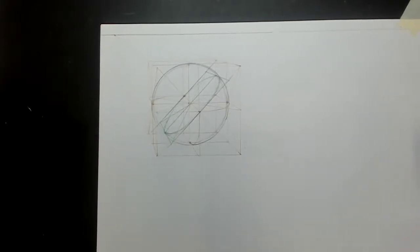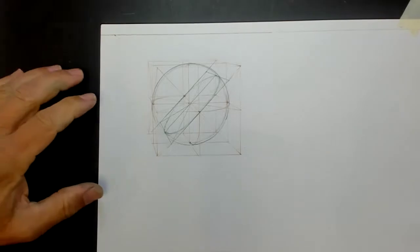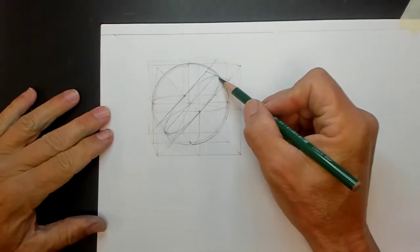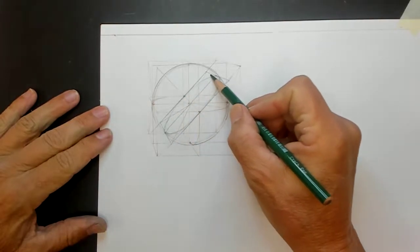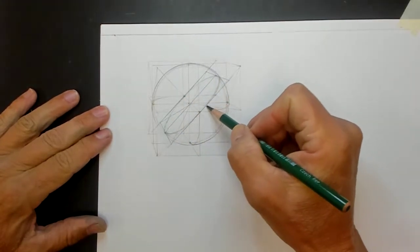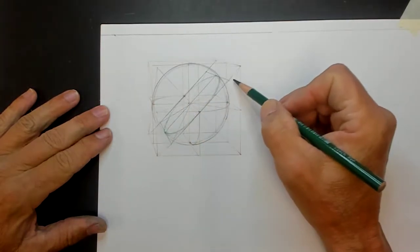Let's do the cast shadow of this one. All you're doing really is treating this as an inclined circle, an ellipse in the inclined circle in perspective.